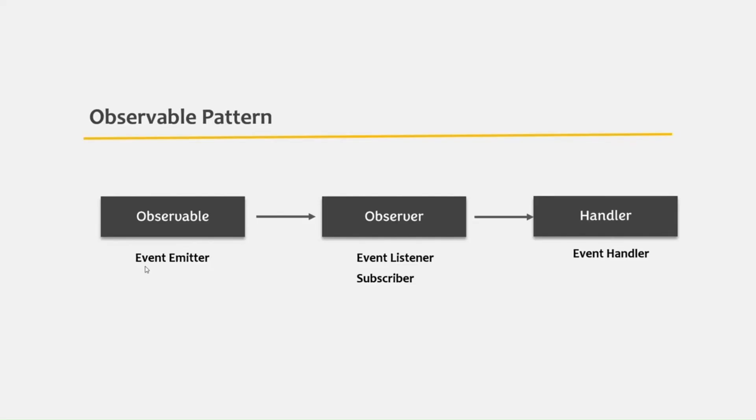In RxJS, an observable can emit three types of events: a next event, an error event, or a completion event. There will be an observer that subscribes to these events. Whenever the observable emits a next, error, or completion event, the subscriber listens for that event and, if desired, handles it by executing some code. It can handle those events by passing next, error, or completion functions as callback functions to the subscribe method.